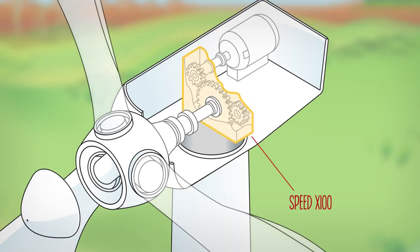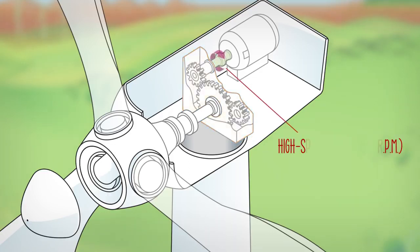That is the mission of the gearbox, which raises the speed over 100 times and transfers it to the high speed shaft. The high speed shaft, that rotates at up to 1500 revolutions per minute, is connected to a generator.